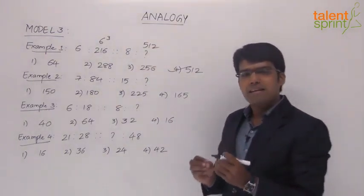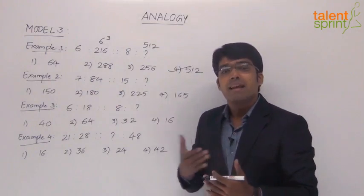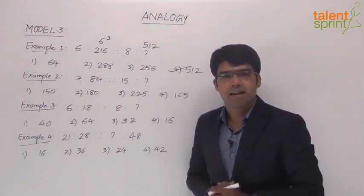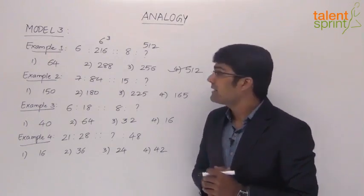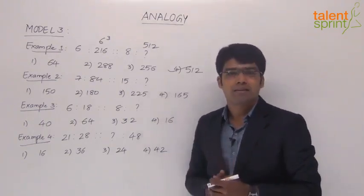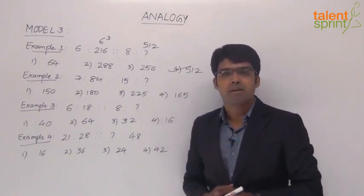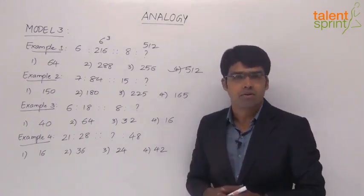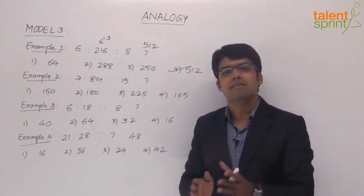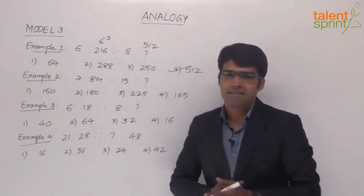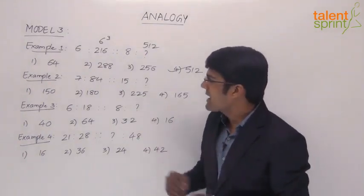So that's how you simply understand the relationship between the numbers and find out the number in the second pair or complete the second pair accordingly. Here we have taken cubes as a relationship. Likewise in the exam it may be squares or any other power of the given number. It can be 6 is to 6 power 4 and so on. We just need to establish the proper relationship between the numbers of the given pair and accordingly complete the second pair.